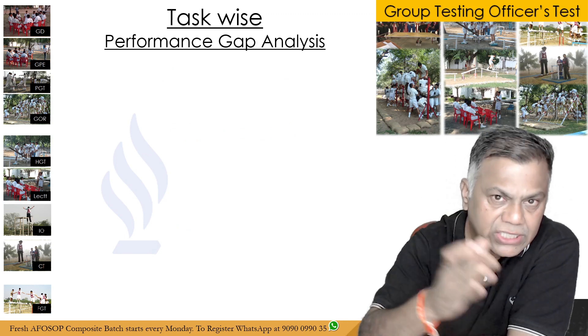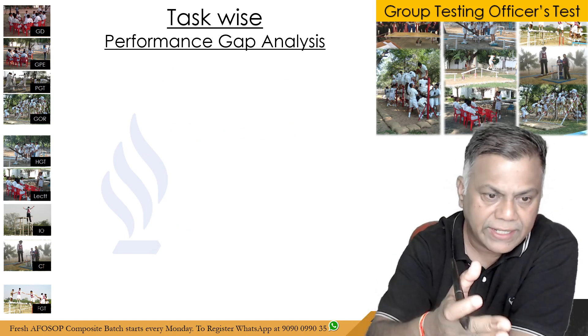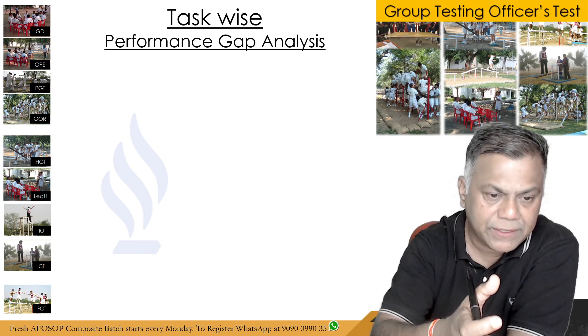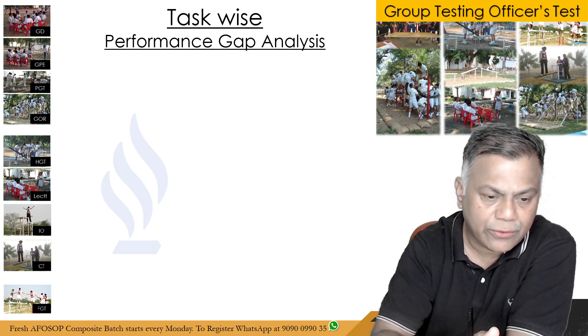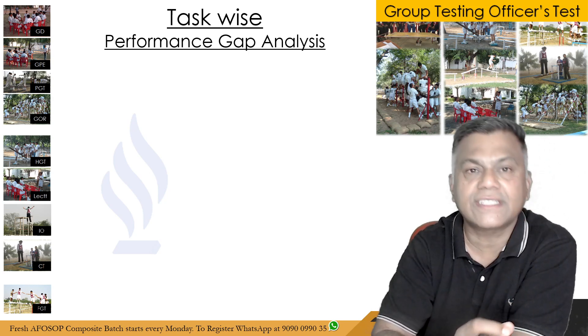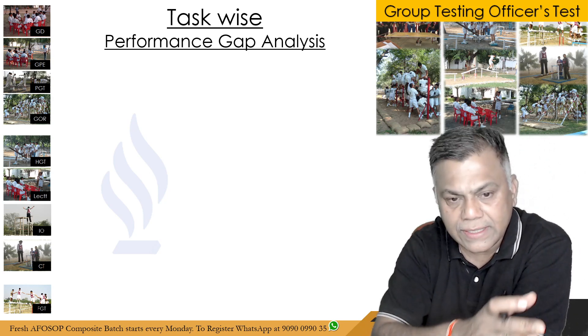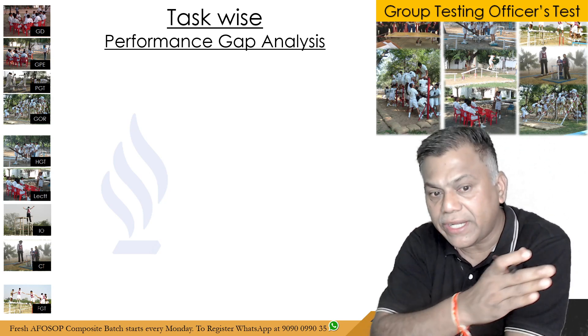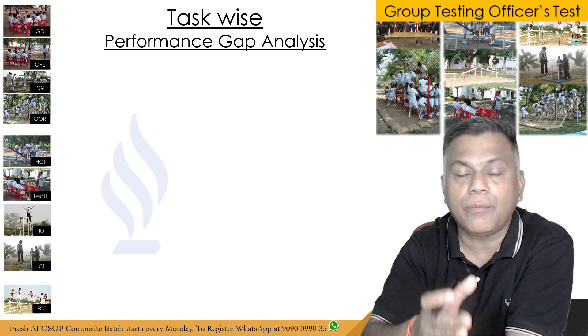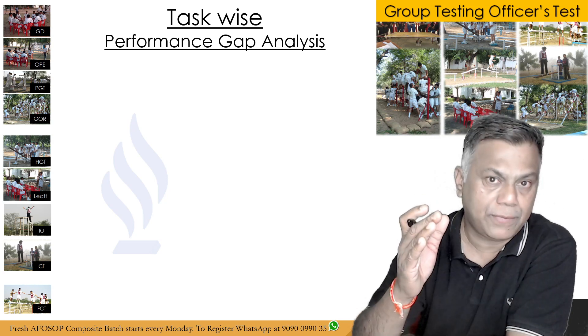There are nine tasks in the GTO series: Group Discussion (GD), Group Planning (GP), Progressive Group Task (PGT), Group Obstacle Race (GOR), Half Group Task (HGT), Lecturette, Individual Obstacle, Command Task, and Final Group Task. Task-wise, you have to identify your performance gap — how much gap exists in each of these tasks.